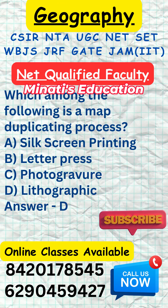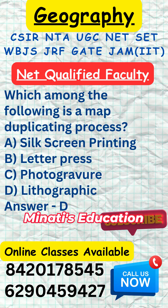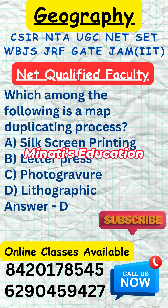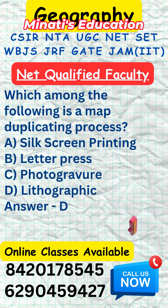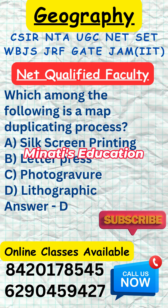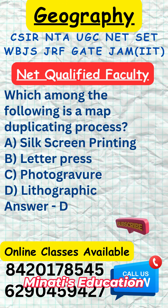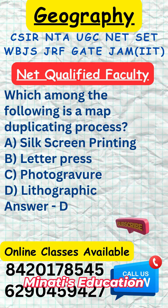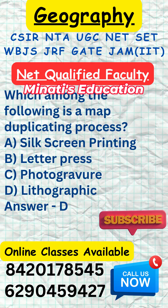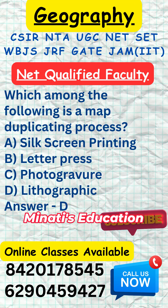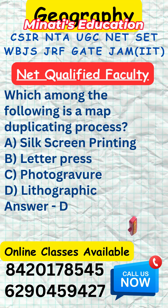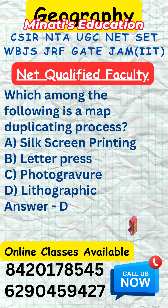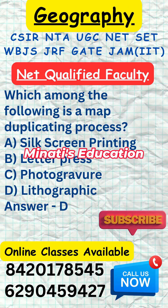Photogravure is indeed a process used in printing, but it is more accurately described as a method for reproducing photographs rather than maps. It is an intaglio photomechanical process where a copper plate is coated with a light-sensitive gelatin tissue, exposed to a film positive, and then etched, resulting in a high-quality image. For map duplication, processes like lithography or various forms of offset printing have been more commonly used historically, as these methods are better suited to the requirements of map reproduction, which often involve fine lines and detailed text.